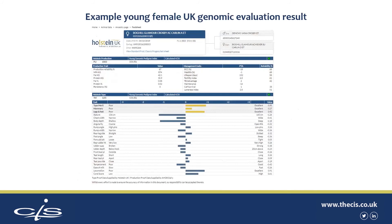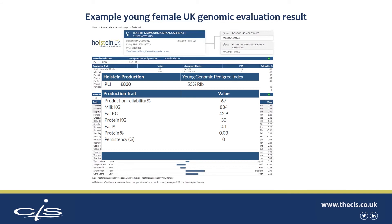This is an example of a young female UK genomic evaluation result. It's interesting to look at the reliability in detail — there are several reliabilities quoted on this fact sheet. The PLI for this animal is 55% reliable. The production reliability for the production traits is 67%, and there's also a type reliability highlighted here at 53%. So it's interesting when genomic testing to compare the reliabilities before and after testing, as that shows you the real gain you've made through genomic testing.